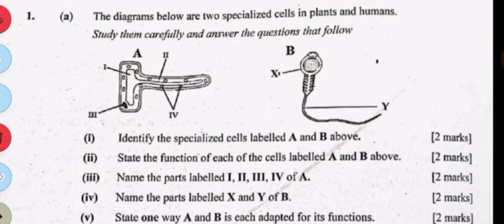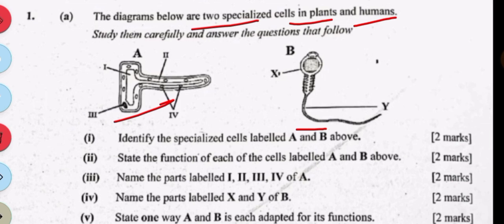Starting with this question: the diagrams below show two specialized cells in plants and humans. We have cell A here and cell B here. Identify the specialized cells labeled A and B. A is the one in a plant and B is the one in an animal. A is called the root hair cell, and B is a sperm cell.